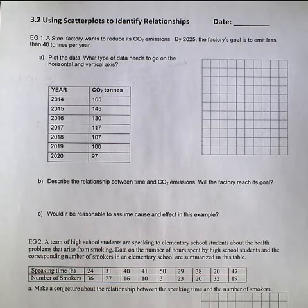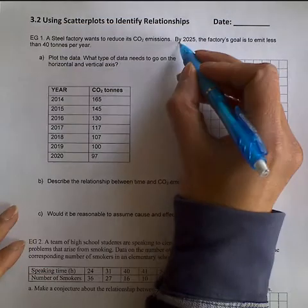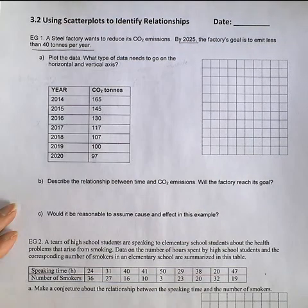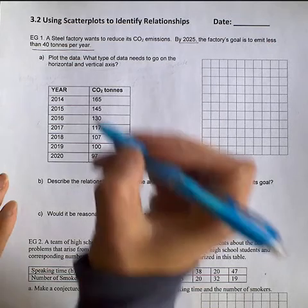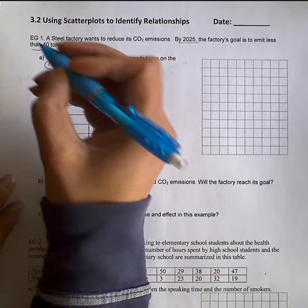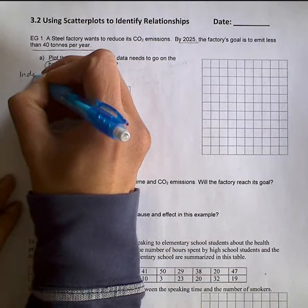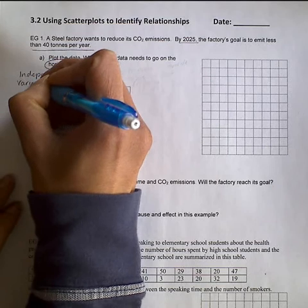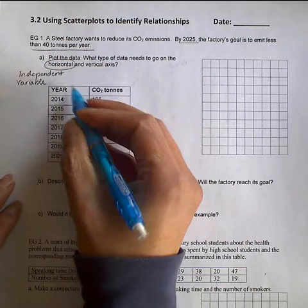Let's take a look at the first example. Example one: a steel factory wants to reduce its CO2 emissions. By the year 2025, the factory's goal is to emit less than 40 tons per year. What we're going to do first is plot the data. But before we do that, we should consider what type of data needs to go in the horizontal and vertical axes. In the horizontal axis, we always need to have our independent variable. And in this case, the independent variable will be the year.